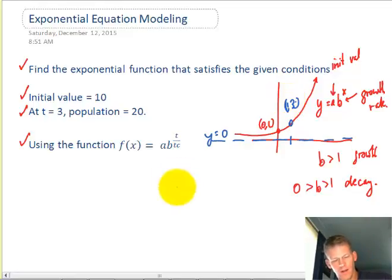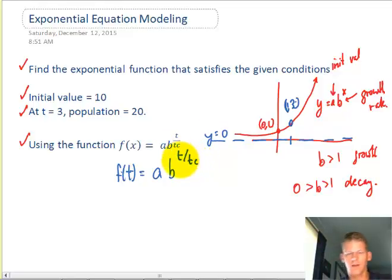So in this situation here, we have a model where we say f of x is equal to a times b. Actually, let me write f of t because my variables over here are time. I have time, this is t, divided by what is called the time constant.